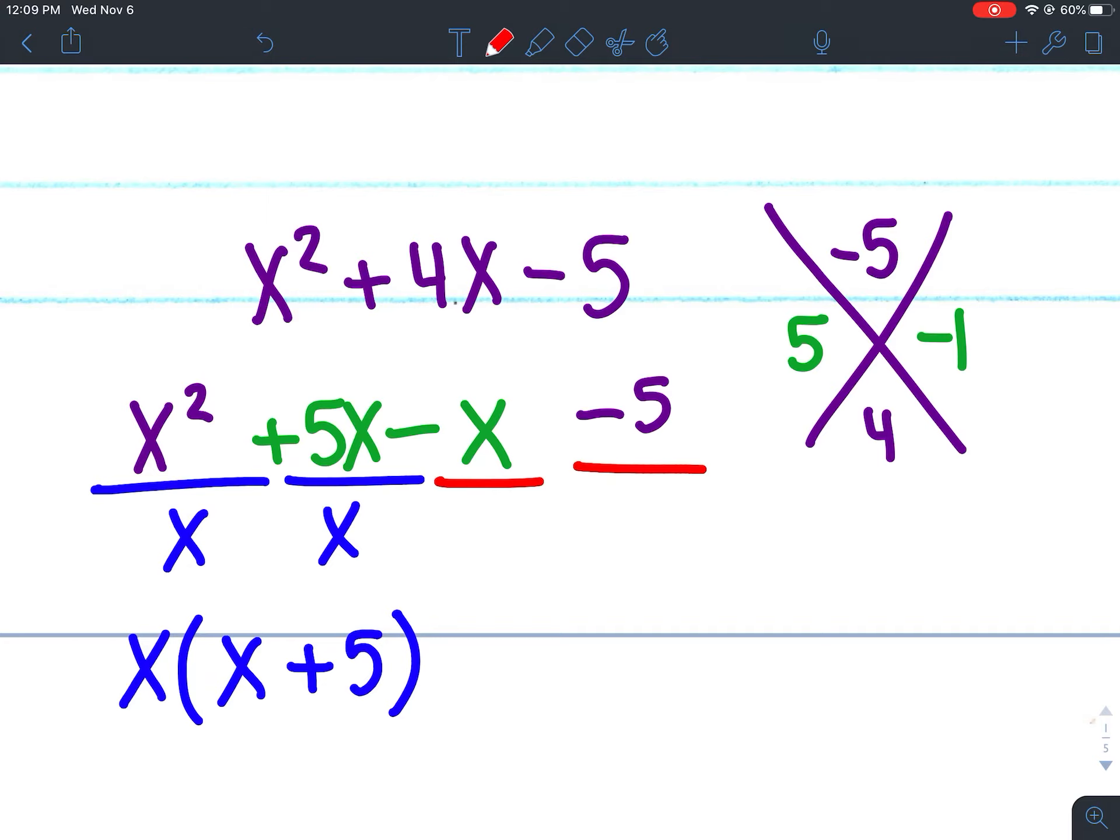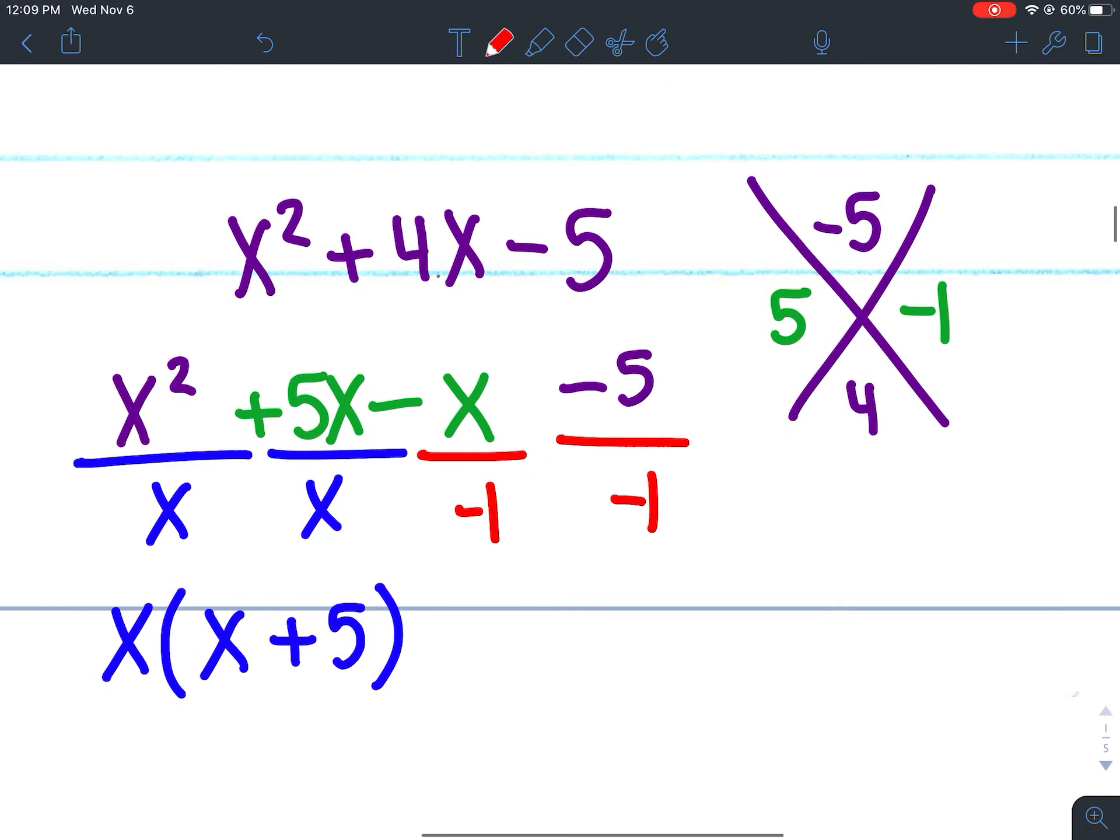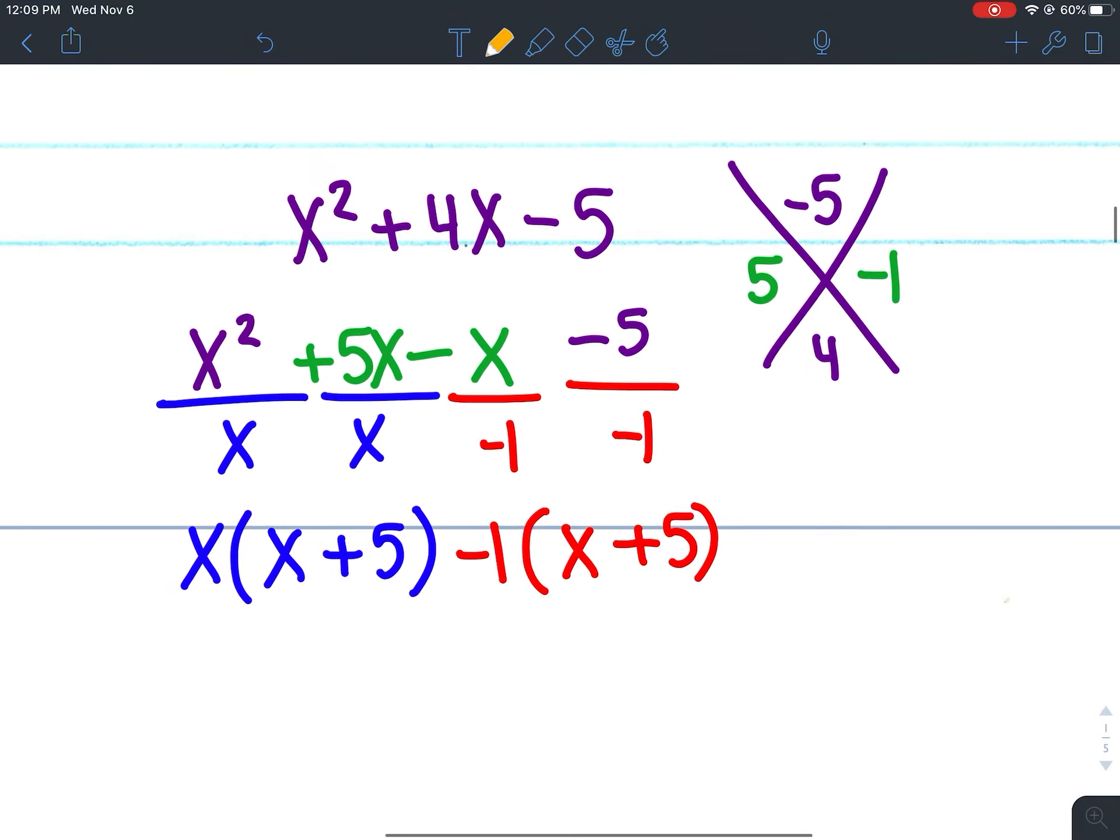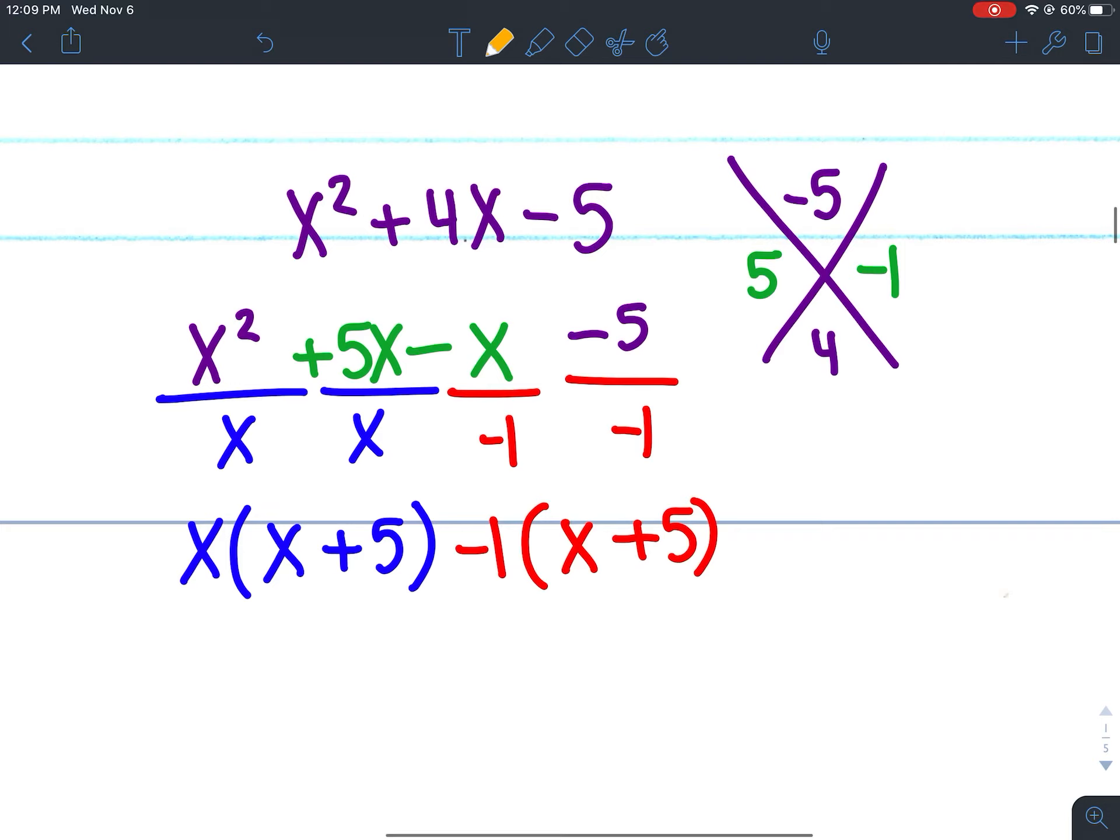And then you're going to find the GCF of the next two terms and that's going to be -1 because that's the most you can factor out. Remember if that first term in the group is negative, you want to factor out a negative. So -1 and then you have positive x + 5. So at this point you would check to make sure that your parentheses match each other, which they do. So one of our factors is x - 1 and the other one is x + 5.